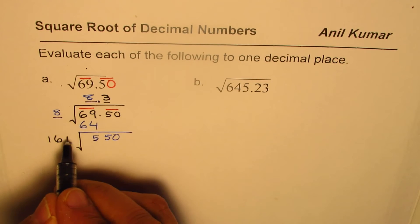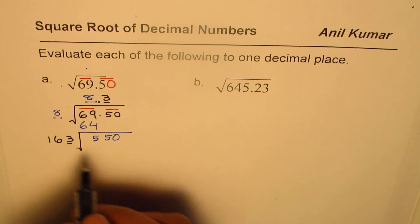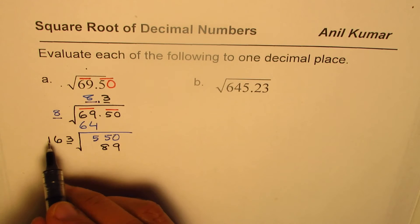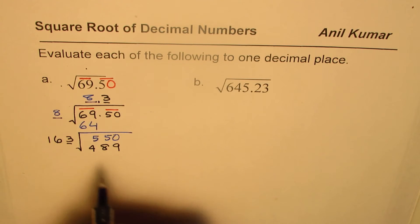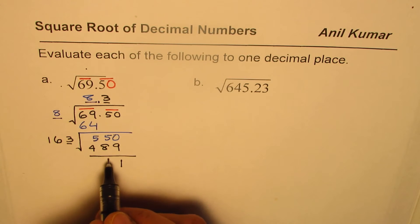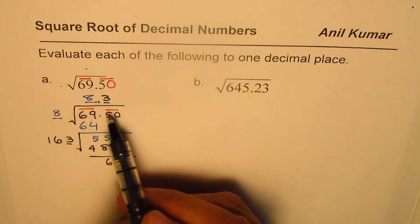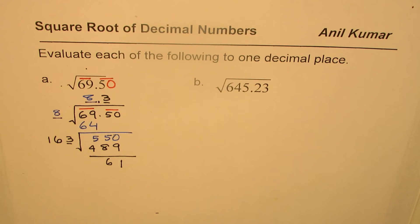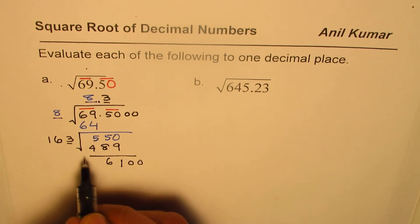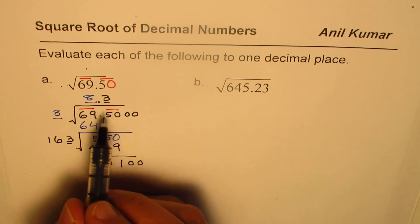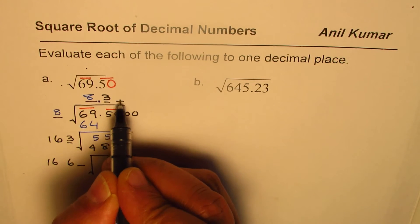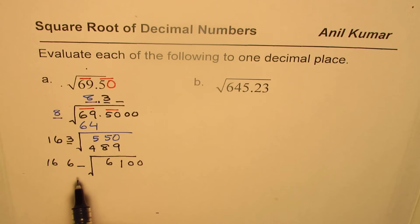Let me try 3 here. 3 times 3 is 9, 3 times 6 is 18, 3 times 1 is 3, giving 4. Taking away: 10 take away 9 is 1, 14 take away 8 is 6. So we get some remainder — it is slightly higher than 8.3, but we stop here. If you want 2 decimal places, you can bring down 2 zeros and divide further by twice this number, which will be 2 times 3 is 6 and 2 times 8 is 16.